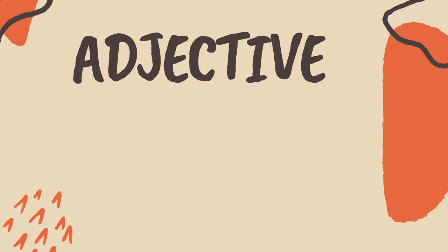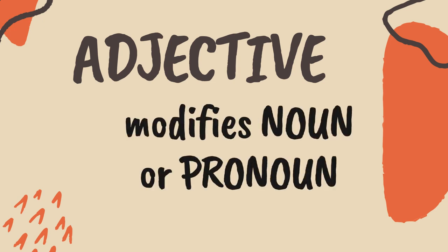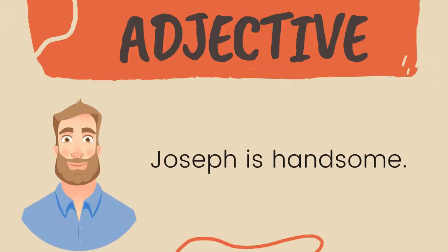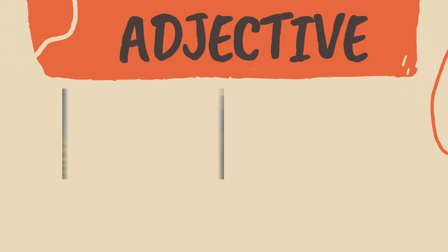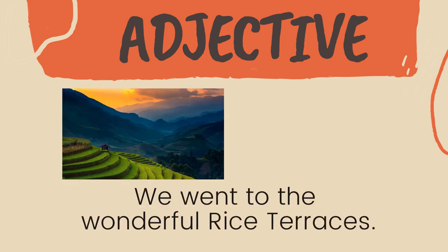Now, an adjective is a part of speech used to modify a noun or a pronoun. It is used to provide description of the item it modifies. For example, 'Joseph is handsome' — handsome is used to describe Joseph. Another example: 'We went to the wonderful rice terraces' — the word wonderful describes the noun rice terraces.